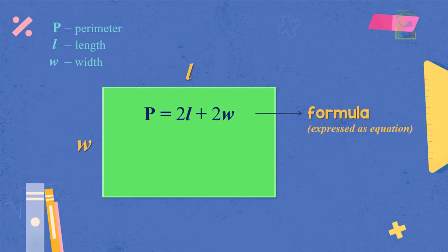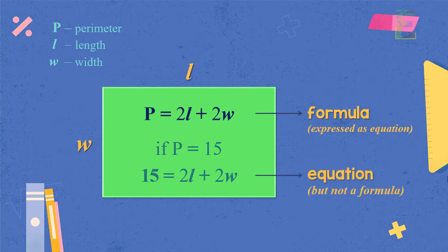Now what if I told you that the actual perimeter of the rectangle is 15. So this will become 15 equals 2L plus 2W. Therefore, this is an equation but not a formula. So again, all formulas are expressed as an equation but not all equations are formulas.